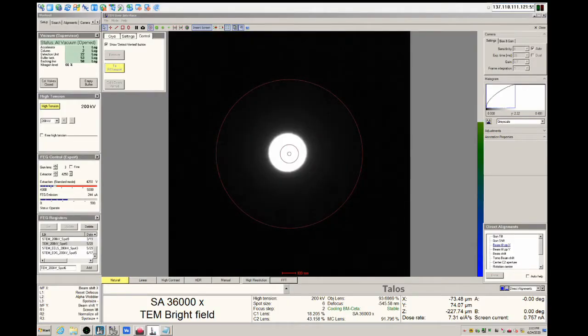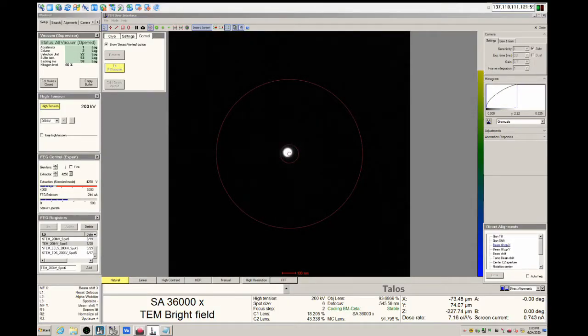Next, we want to double check the beam shift. Go to direct alignments, beam shift again. And with a very small spot, use the multifunction X and multifunction Y dials to center the spot. Next, go to direct alignments and we want to do the beam tilt PPX alignment.